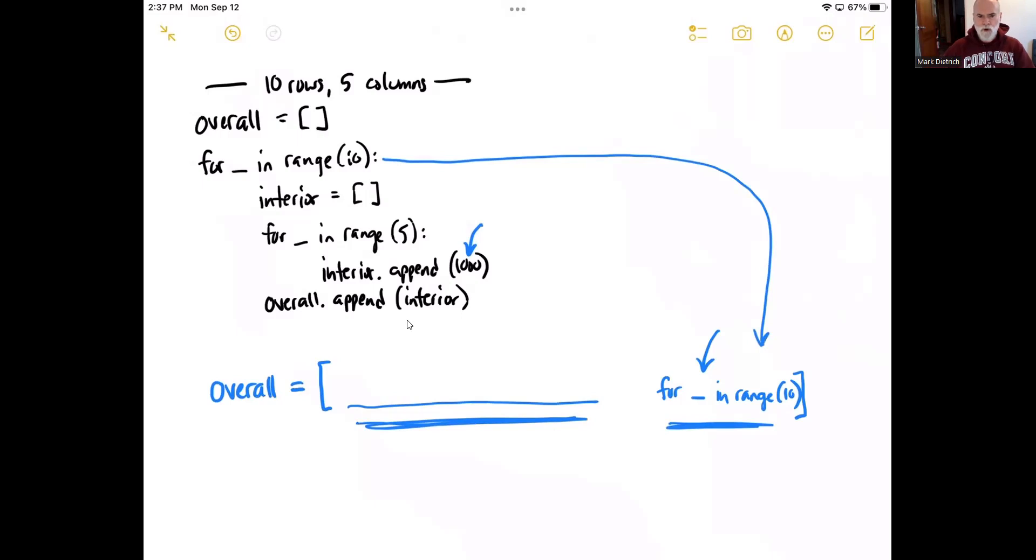Now, the question becomes, what do we put in the middle? Well, we know that it's going to follow this exact format. We know that we're going to create an interior list and that list then gets added to the overall list and that then becomes a list of lists. So in the interior here, we're going to have to put another list in there. So let's put in the square brackets again for that interior list.